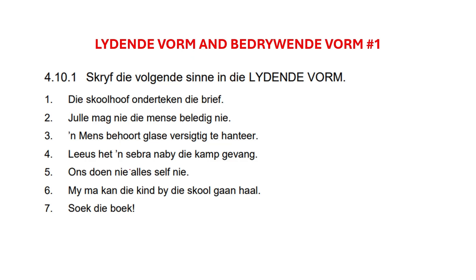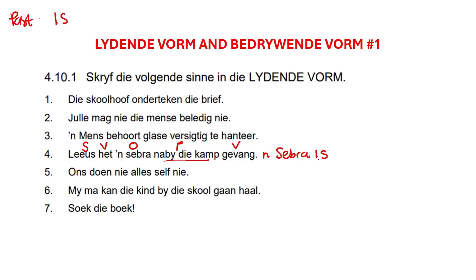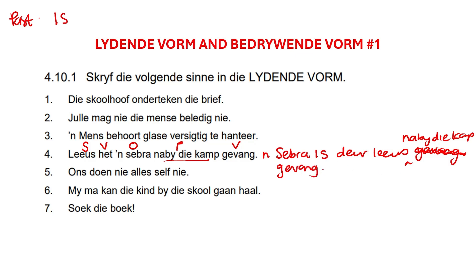Next one: 'Liews het 'n sebra naby die kamp gevang.' What is the tense? 'Het' — that is past tense. What is our stompie? Subject: Liews. Verb: gevang. Place: naby die kamp. So we start with the object: ''n sebra.' It's past tense, so we use 'is'. ''n Sebra is.' No time, no manner. Then 'deur die subject': 'deur Liews'. Then place: 'naby die kamp.' Then our verb: 'gevang' — it already starts with 'ge', so we don't add another 'ge'. So: ''n Sebra is deur Liews naby die kamp gevang.'